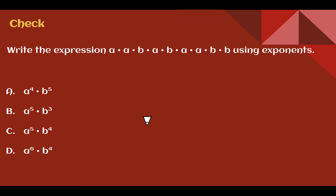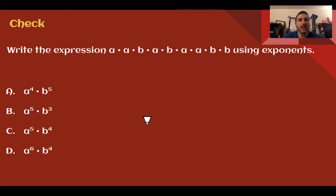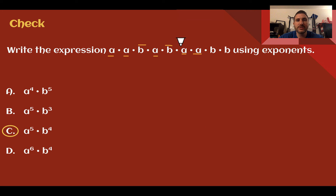Check your understanding: Write the expression given using exponents. Pause the video now and complete the check. The answer is C. There are 5 A's and 4 B's — 1, 2, 3, 4, 5 A's and 1, 2, 3, 4 B's — so A to the 5th, B to the 4th.